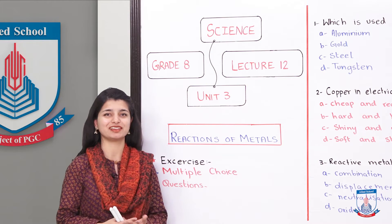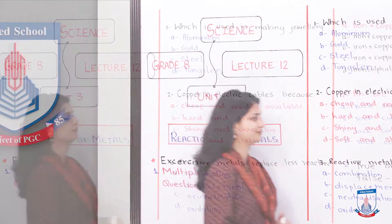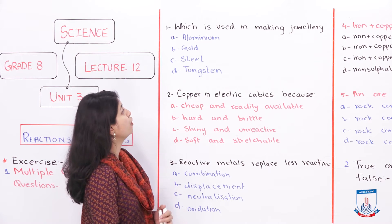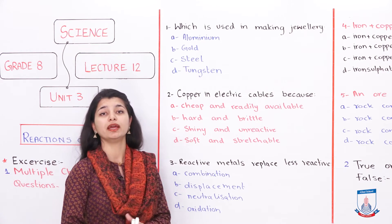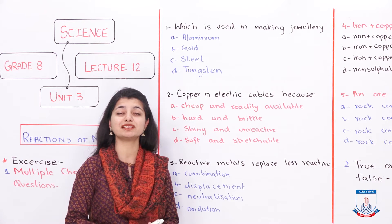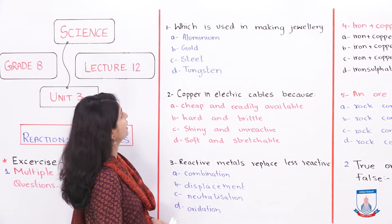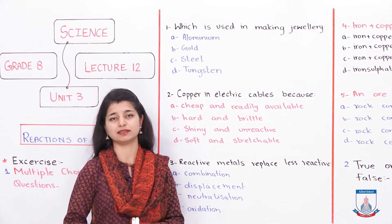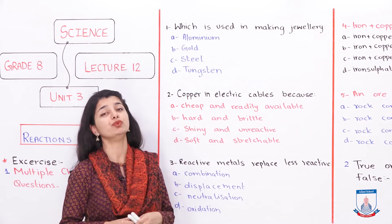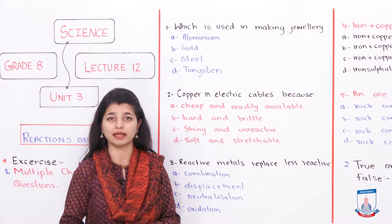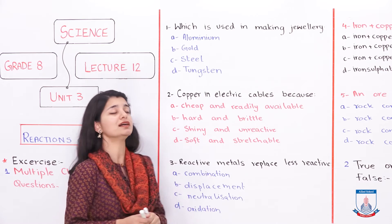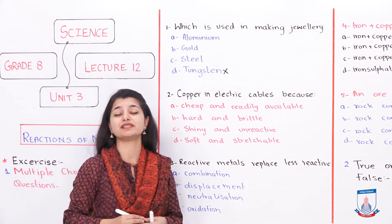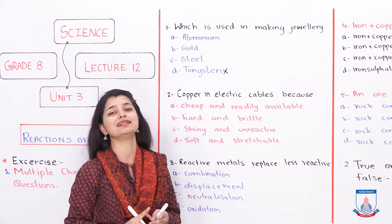Let's begin with the first MCQ, which is rather easy. The question is: which metal is used for making jewelry? The options are aluminum, gold, steel, and tungsten. We can immediately eliminate tungsten because it was never mentioned anywhere in the chapter, so option D is cancelled. That leaves us with aluminum, gold, and steel.